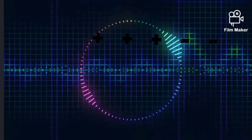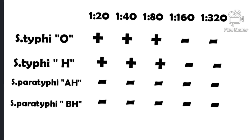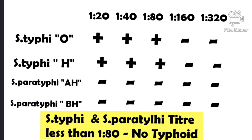With this basic knowledge, let's look at how to read a Widal test report. You can see in the slide that for S. typhi O and S. typhi H, the titer is positive up to 1:80 and the remaining values — 1:160 and 1:320 — are negative. S. paratyphi AH and BH are completely negative. As I said, any titer of 1:80 or less is considered typhoid negative, meaning the person does not have typhoid. So with this report, we can say this person is not infected with typhoid.